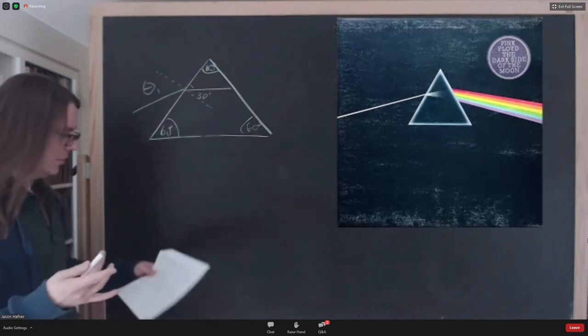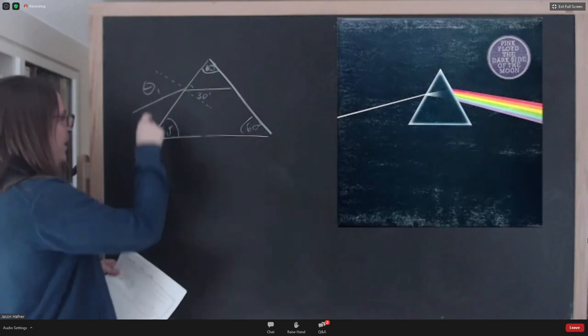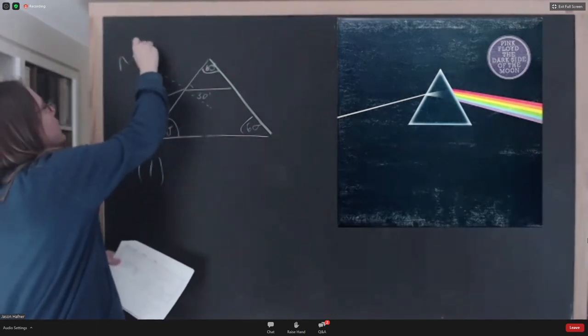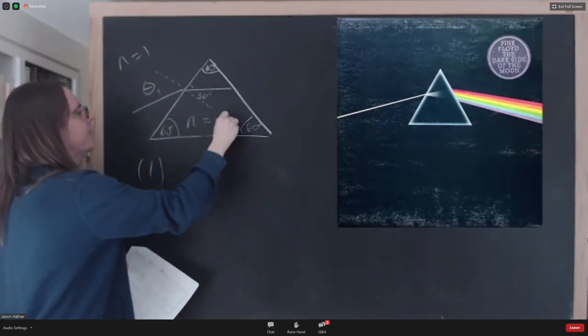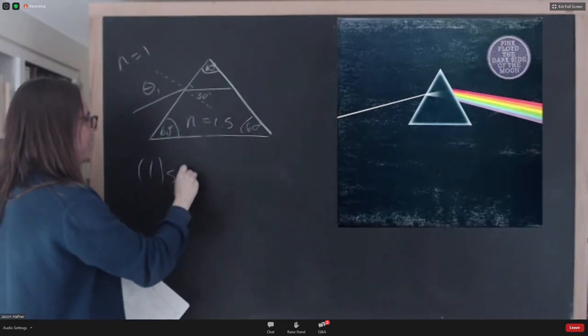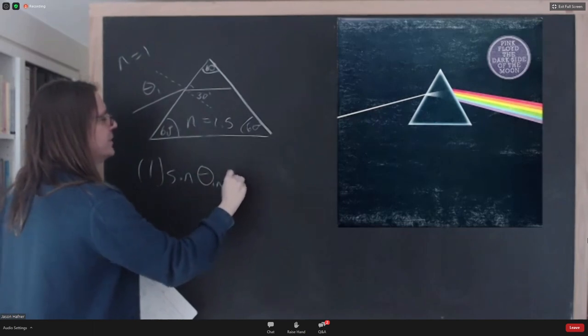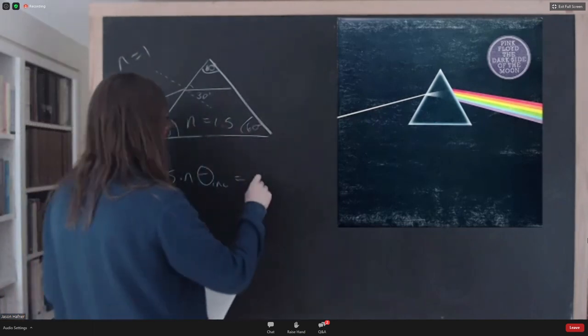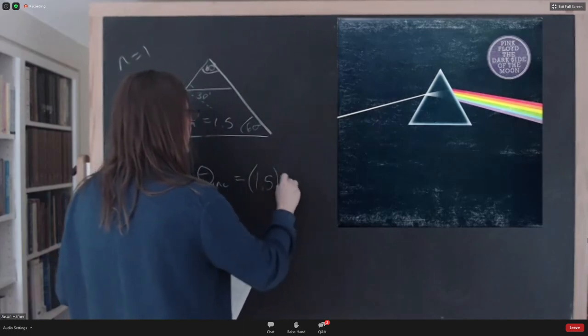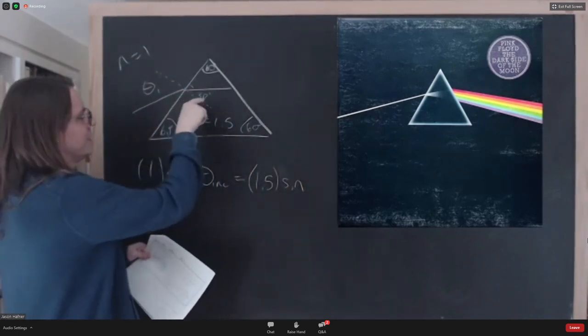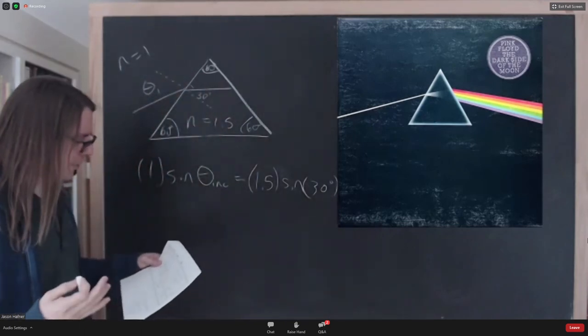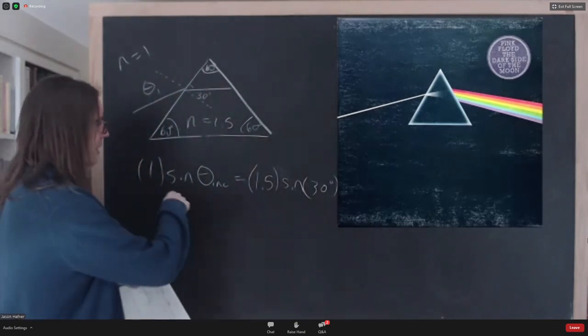So what is the incidence angle? Well, we can just go through the numbers. Out here, it was n1, which is air, n equals 1. n equals 1.5 times the sine of the incident angle that we're looking for equals 1.5 times the sine of the refractive angle, 30 degrees. So let's go through that. Solve it. What do we get?